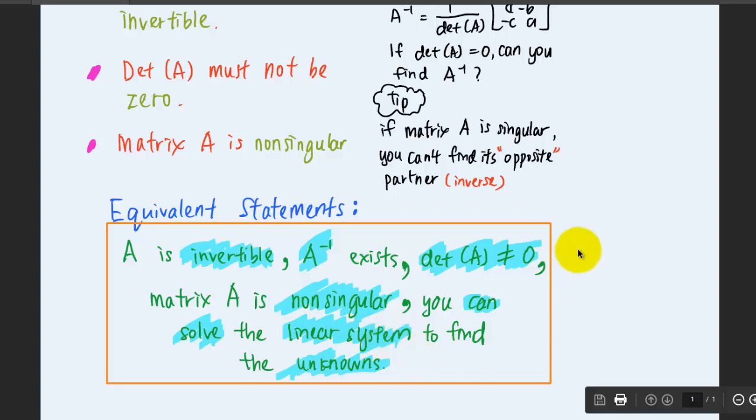This is the interrelationship between the equivalent statements for the invertibility, the inverse, the determinant, and the singularity of the matrix.